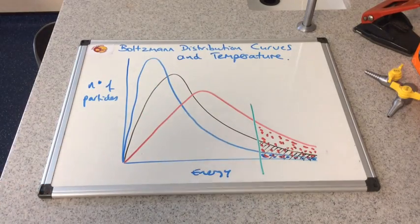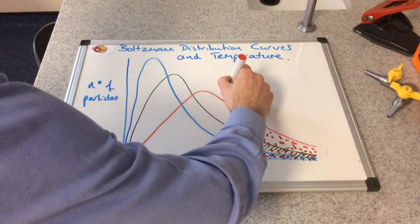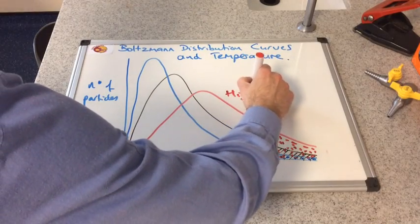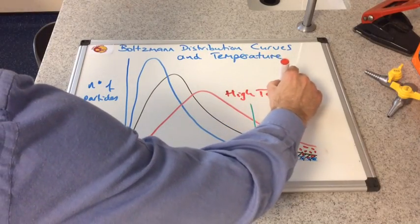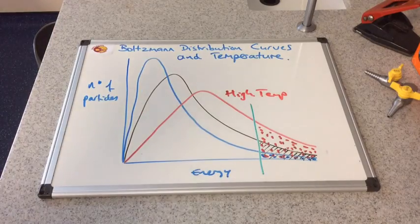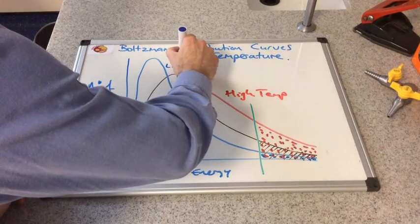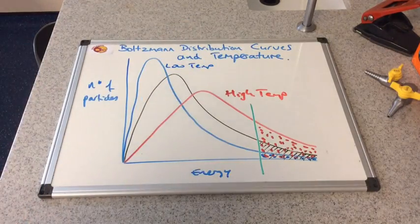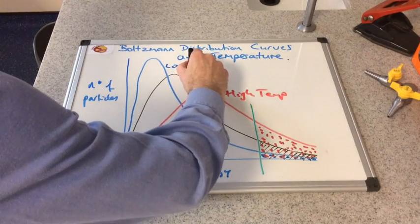So if I just label these up, the red is the high temperature, the blue is the low temperature, and the black curve represents the medium temperature.